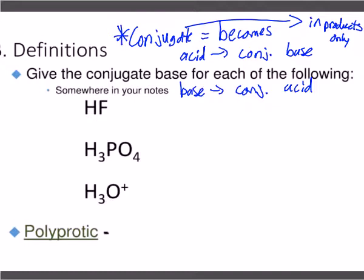According to the Brønsted-Lowry definition, they donate or give away a proton, H⁺. And that's something we didn't really hit yesterday. Let's do this as a review. H⁺: if I'm counting protons, neutrons, and electrons — this is a big review — you will have to do this, we'll come back and review it more.